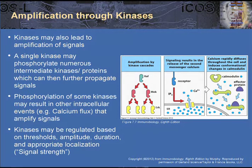This regulation can be based on the threshold, amplitude, duration, and appropriate localization of the downstream proteins, ultimately determining the signal strength. One can imagine that modulation could occur at multiple steps along this pathway — turning on, turning off, turning up, turning down. This is how drugs that target kinases are developed to exploit these different proteins in the cascade that allow the signal transduction event to take place.